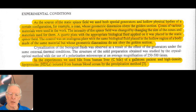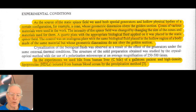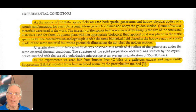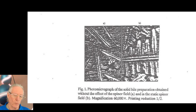A quartz plate with the appropriate biological fluid applied on it was placed in the static torsion field. The control was an analogous plate with the same biological fluid placed in the hollow region of a body made of the same material, but whose geometric dimensions did not obey the golden section. In the experiments, Dr. Akimov used bile from the human liver of a gallstone patient and high-density lipoproteins isolated from human blood serum by the precipitation method. On the next slide, we're going to start to see pictures of the results.